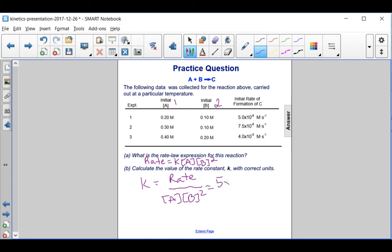So 5 times 10 to the minus 6 molarity per second, over A is 0.2, and B is 0.1 squared, and of course this is molarity times molarity. So we get a K of 0.0025. That would be molarity to the minus 2 seconds to the minus 1.